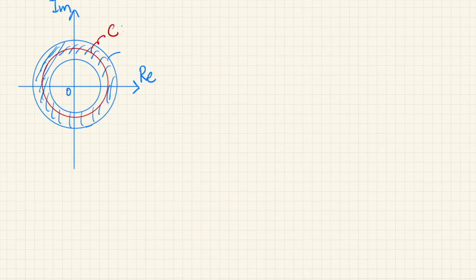Now, let's write this ring region as this, r1. So the inner circle has the radius of r1, and the outer circle has the radius of r2. And suppose r1 is less than 1, and r2 is greater than 1.